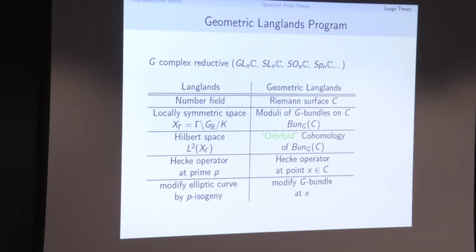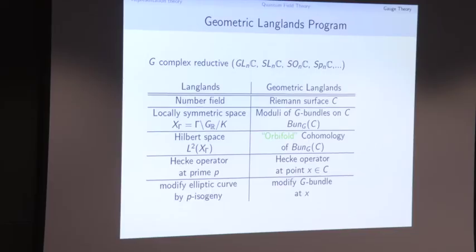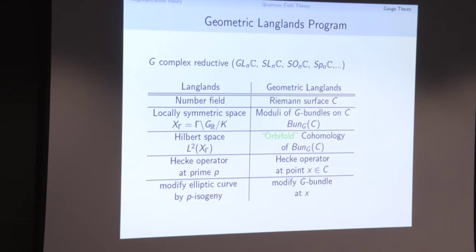Let's do the geometric Langlands program in one slide. We start with a complex reductive group — think GL(N,ℂ), SO(N,ℂ), and so on. We have a table of analogies between the classical Langlands program and the geometric Langlands program. Before, we had a number field that determined the arithmetic locally symmetric space. The number field gets replaced by a Riemann surface. For a Riemann surface, we look at the space of holomorphic G-bundles — principal G-bundles on C — which replaces the locally symmetric space.